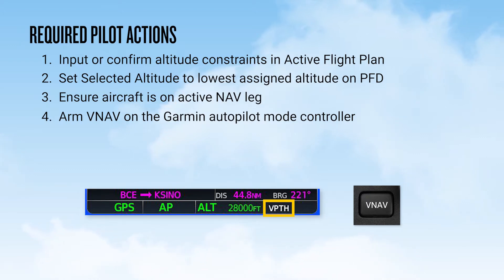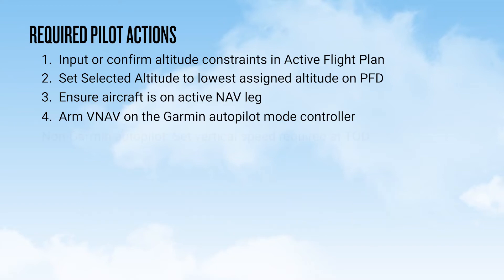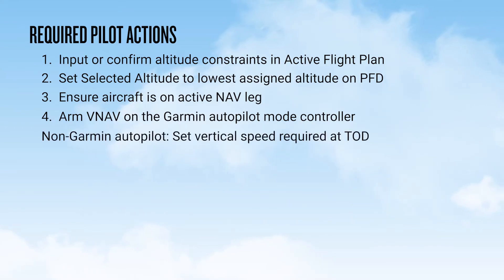If a pilot action is missed or a limitation exceeded, alternate methods should be used for the descent. This could include vertical speed mode, VNAV Direct To, or disengaging the autopilot and hand flying. For non-Garmin autopilots, you need to set the vertical speed required at the top of descent.